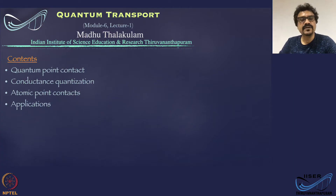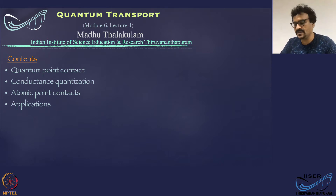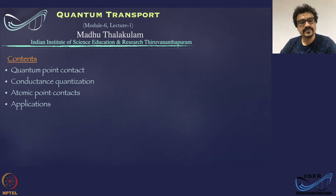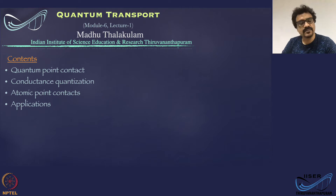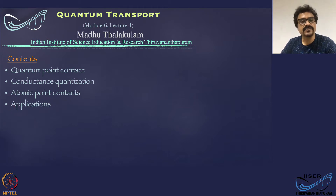In this module, we will discuss transport through one-dimensional systems. We will discuss the transport mechanism by taking quantum point contact as the candidate device. Then we will discuss conductance quantization. We will move on to another similar device called atomic point contacts, and we will also discuss the applications of these devices.